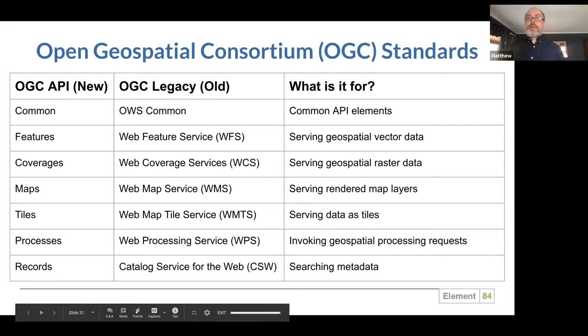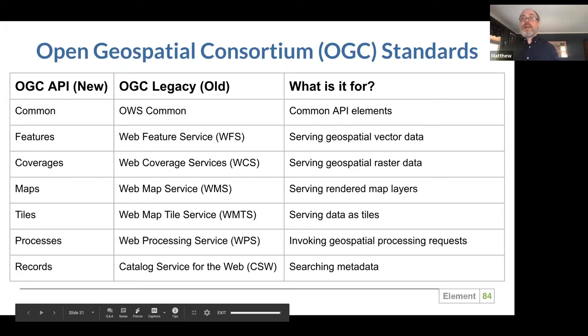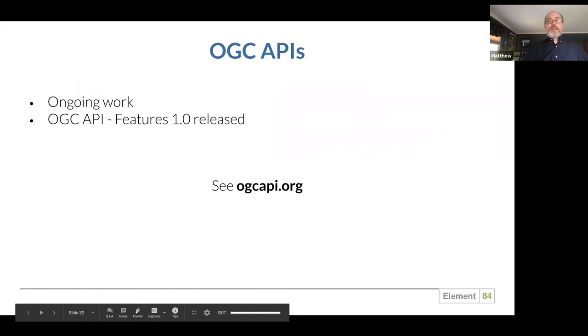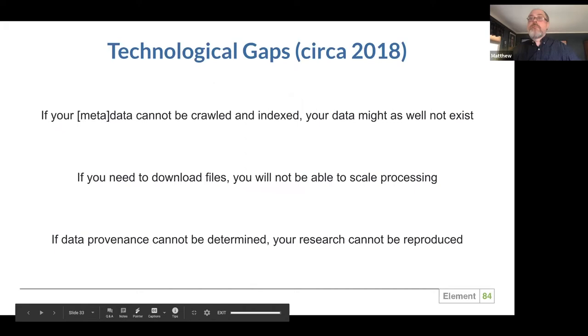I'd like to talk about some technological gaps as they were a couple years ago. If you have a CubeSat generating metadata but it can't be crawled and indexed, your data might as well not exist. Users need to be able to find and easily discover the data. In this day and age there is so much data — we're drowning in open data and commercial data — and that data needs to be easily crawled and indexable like a search engine. Also, if you need to download these files, you're not going to be able to scale that processing.